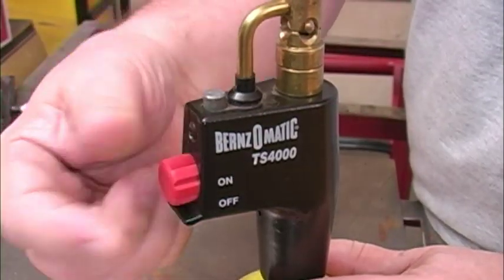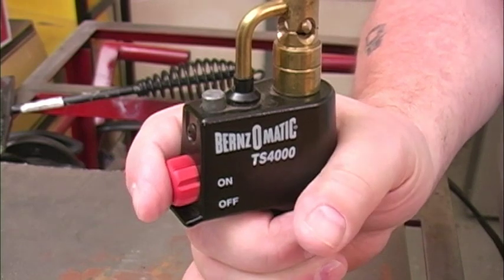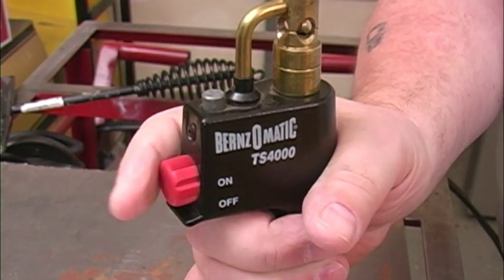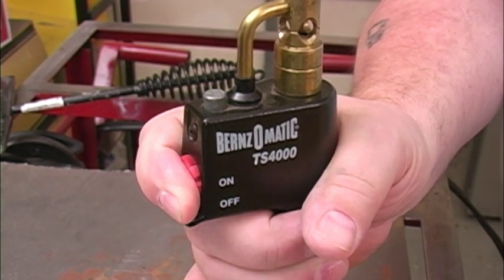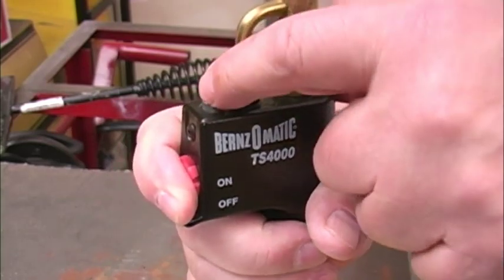To use this torch, we just turn the red dial to the on position and then pull that like a trigger. That starts the gas flowing and ignites it. To lock the torch on, we just push this button on top.